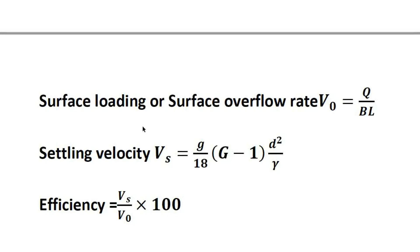For settling velocity values, consider the G-value. If we substitute G = 2, then G−1 = 1. If we substitute G = 3, then G−1 = 2. When we substitute different values, the settling velocity doubles accordingly.